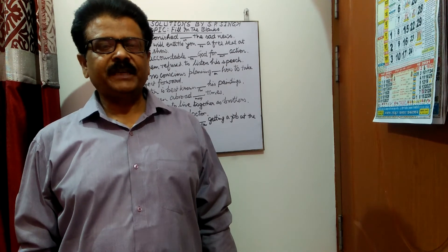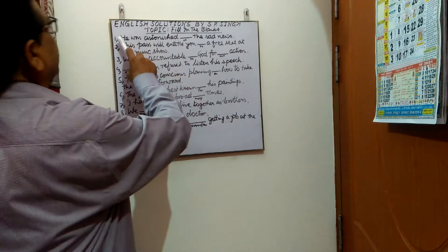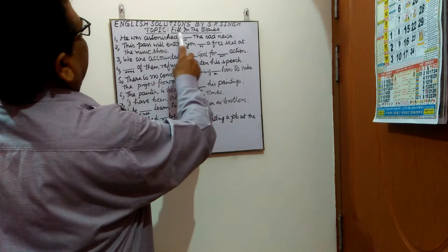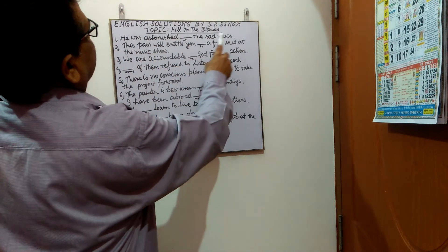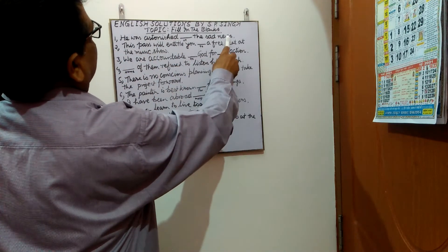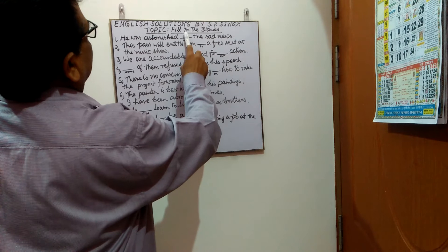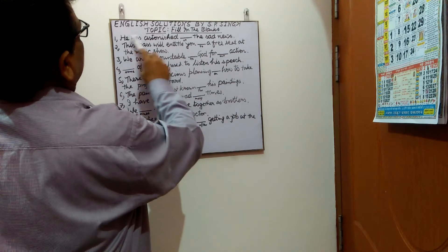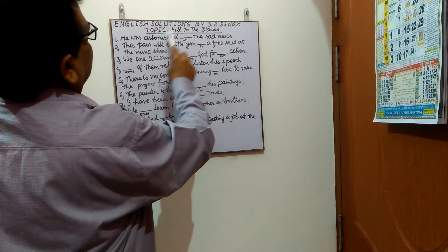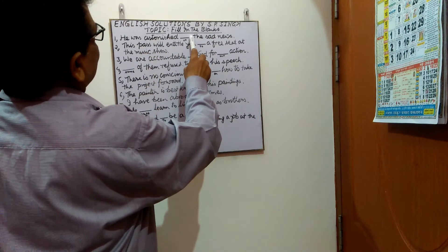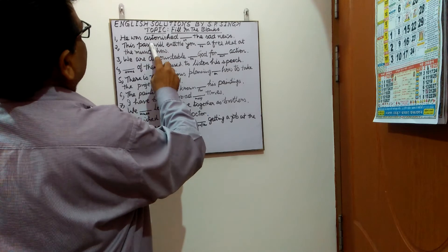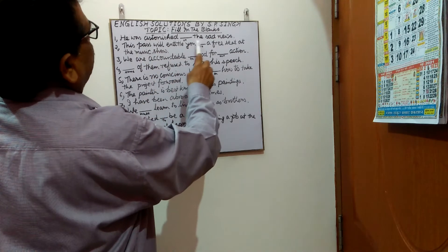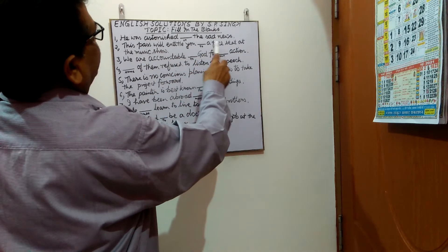First sentence: 'He was astonished ___ the sad news.' In the blank you have to put 'at'. The sentence will be: He was astonished at the sad news.